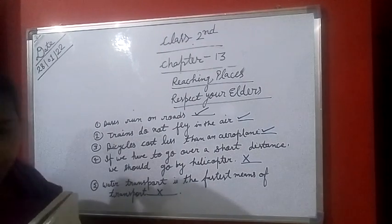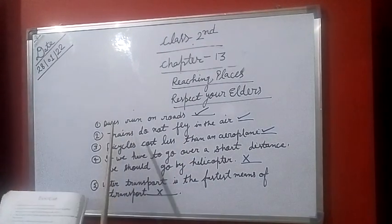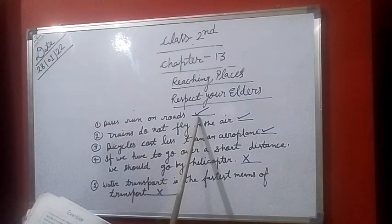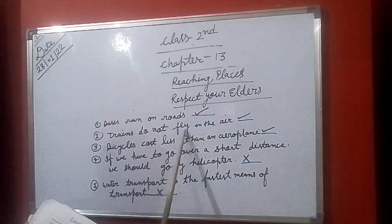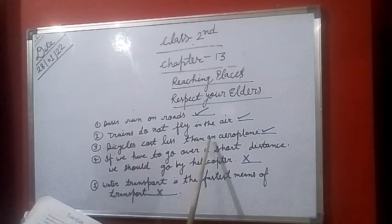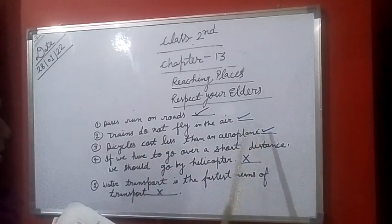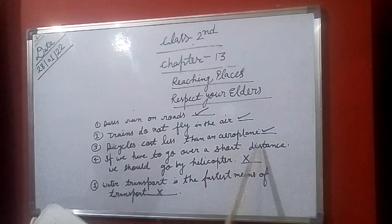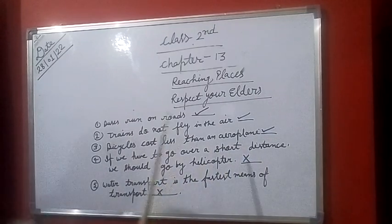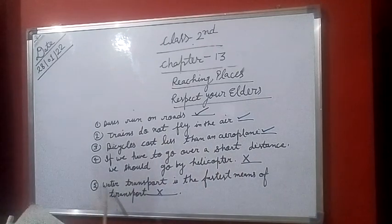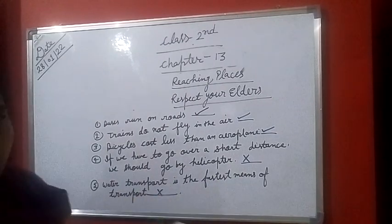Once again, tick the correct and cross the wrong statements. Number 1: Buses run on roads — tick. Number 2: Trains do not fly in the air — tick. Number 3: Bicycle cost less than an aeroplane — tick. Number 4: If we have to go over a short distance, we should go by helicopter — this statement is wrong, cross it. Last, number 5: Water transport is the fastest means of transport — cross it.